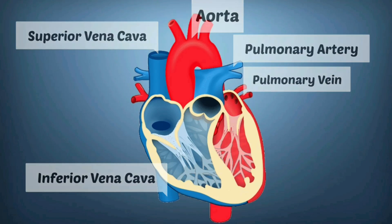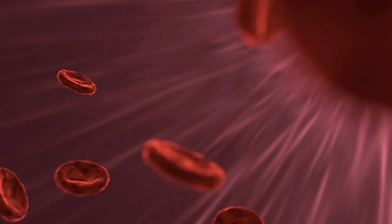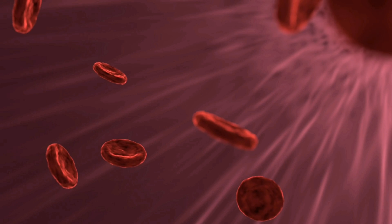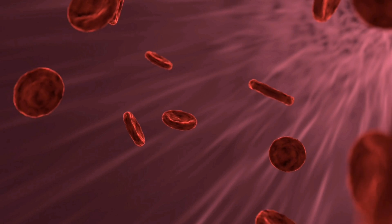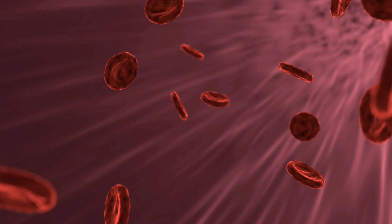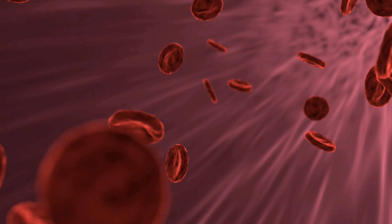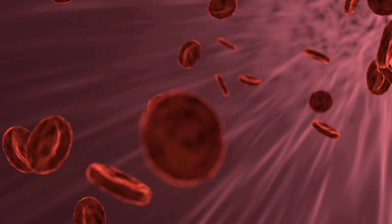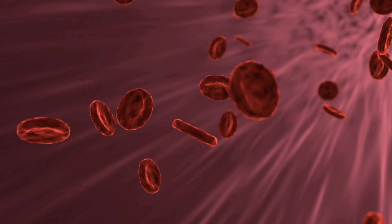The aorta is the main artery that carries blood away from your heart to the rest of your body. The pulmonary arteries carry blood from the right side of the heart to the lungs. The pulmonary veins transfer oxygenated blood from the lungs to the heart.